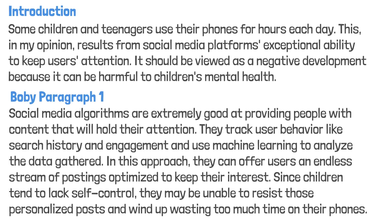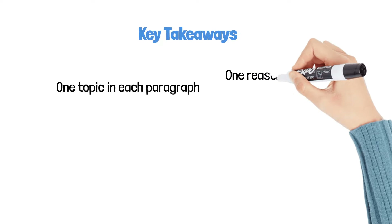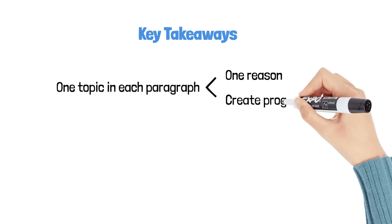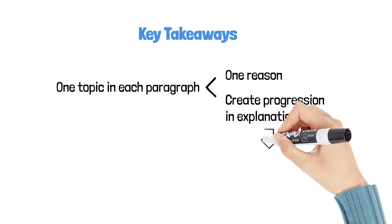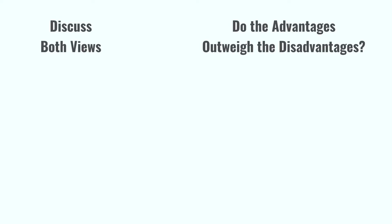This is the entire essay. In order for each paragraph to have one topic, giving only one reason is not enough — we must also make sure that our explanations are not simply a list of items, but rather a logical progression. That is, one sentence leads logically to the next. That's all for this video. You might also be interested in 'discuss both views' and 'advantages over disadvantages' questions — I think for those two types it's even harder to have only one topic in each paragraph. Be sure to check out those two videos. Thanks for watching!